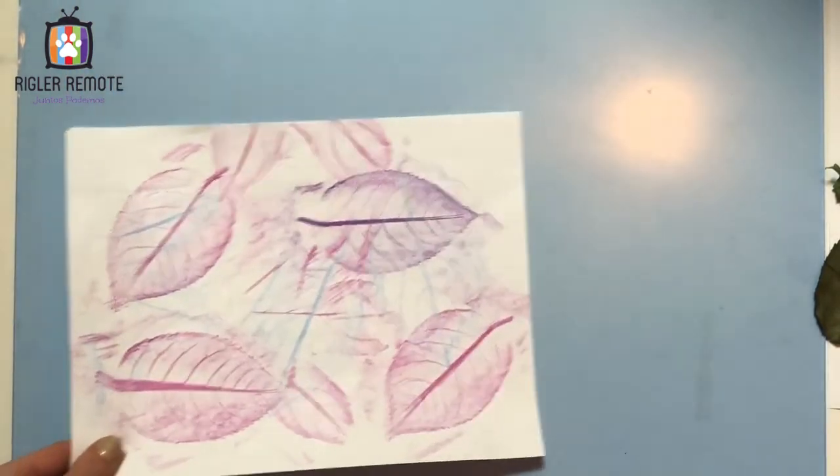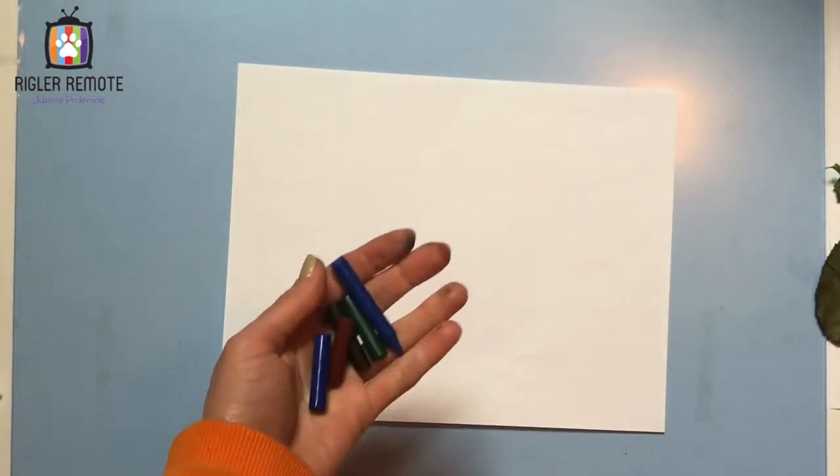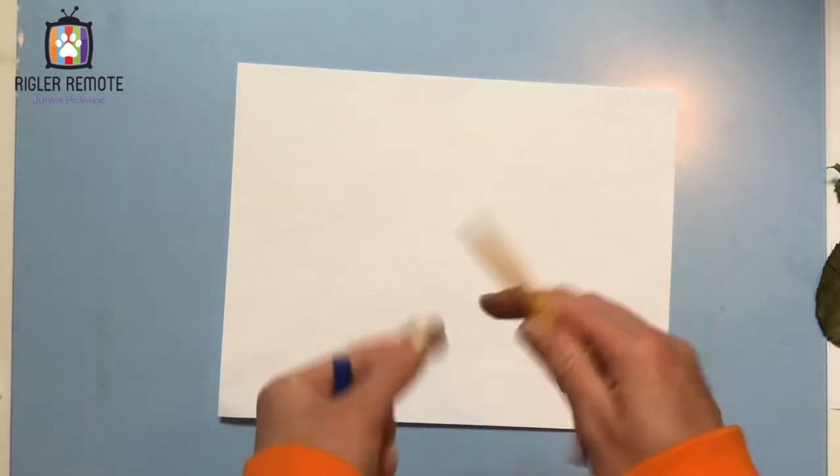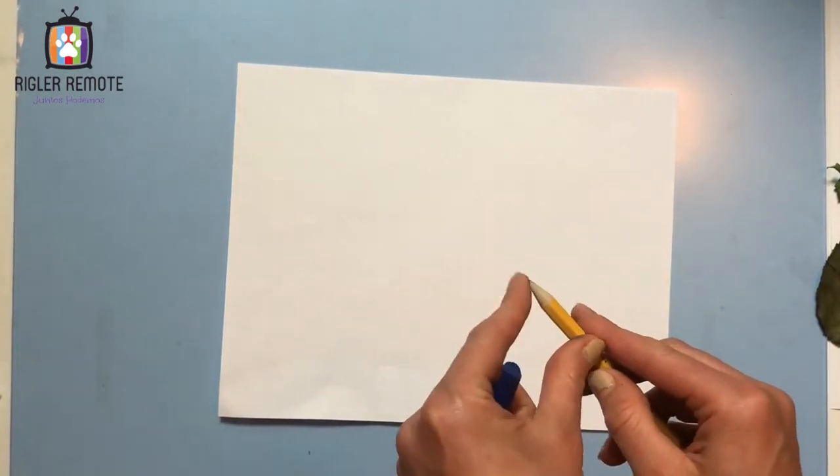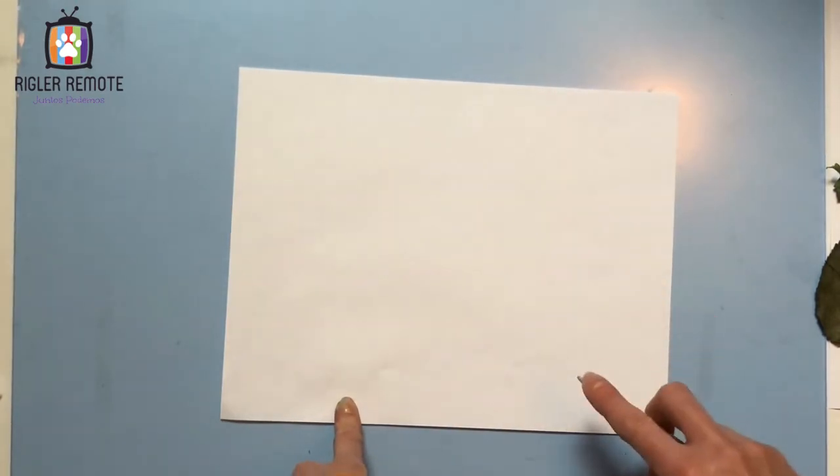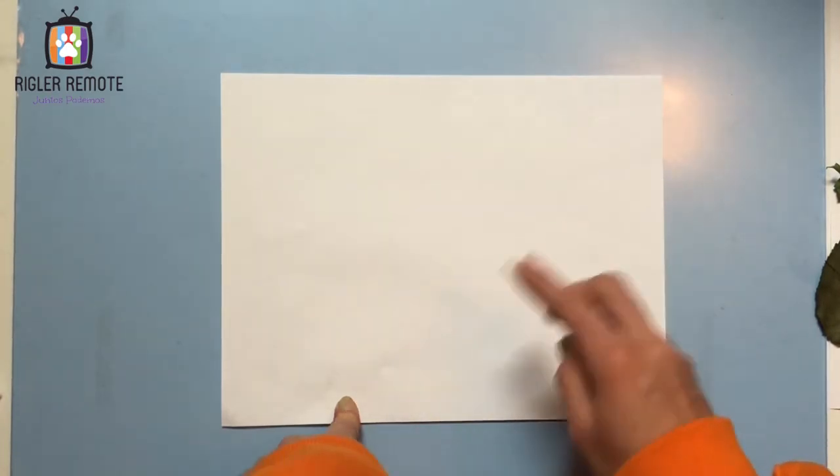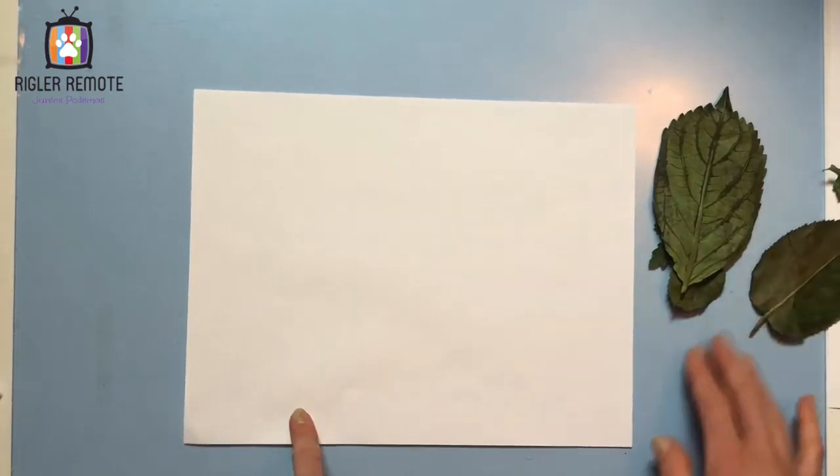So what you'll need for this is some paper. You'll need crayons. You can also use, if you don't have crayons, you can use a pencil, just make sure it's not super sharp and that you're going to use the side of the pencil, not as if you were writing, but actually the side. So you don't poke through the paper. And then you're going to need an assortment of leaves.